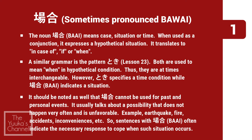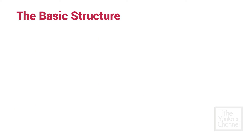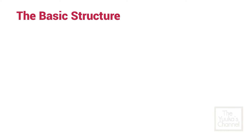Examples include earthquake, fire, accidents, inconveniences, etc. So sentences with baai often indicate the necessary response to cope when such a situation occurs. The basic structure is: verb in plain, ta, or nai form; i-adjective; na-adjective plus na; noun plus no; followed by the pattern baai wa.